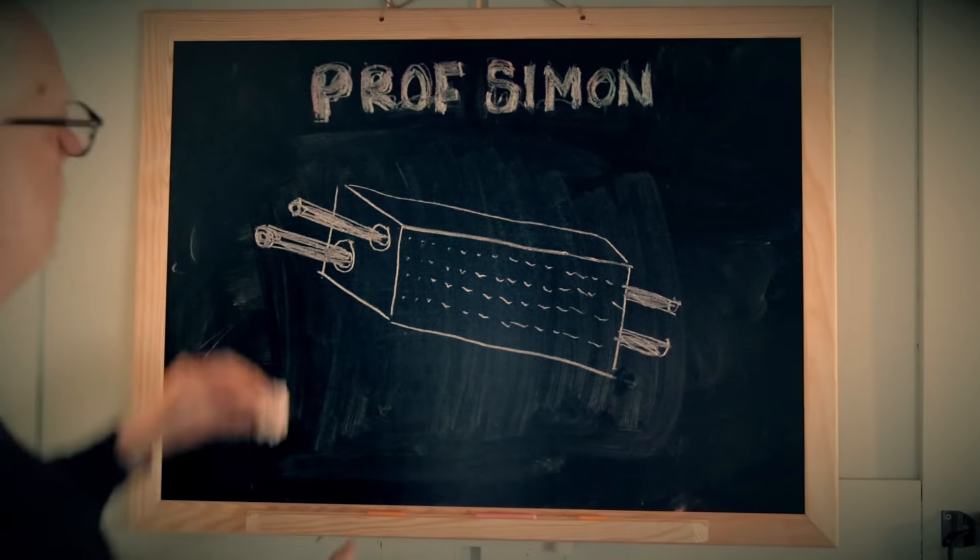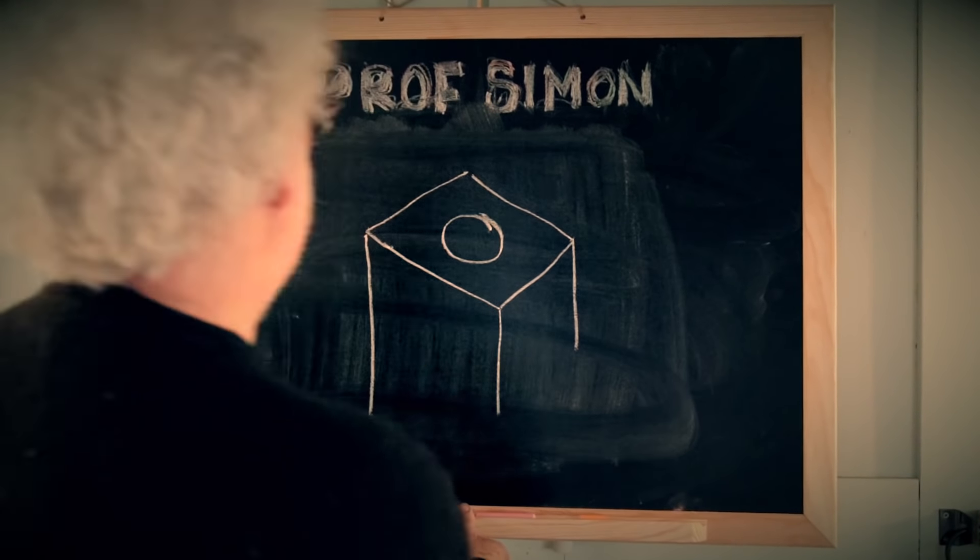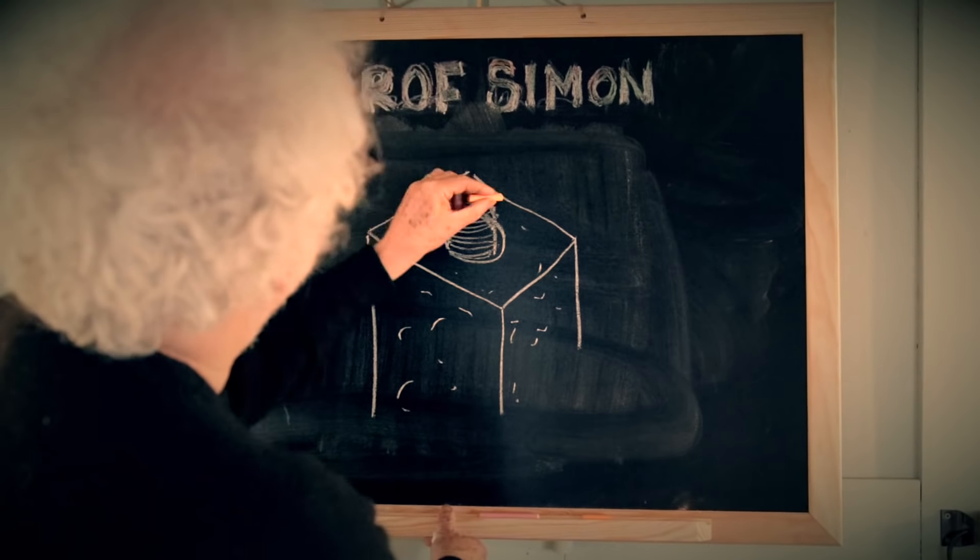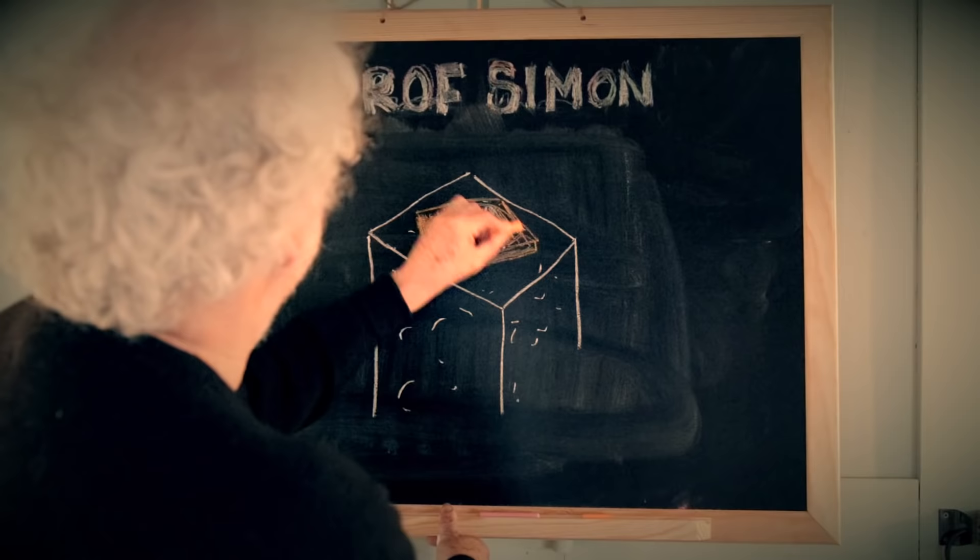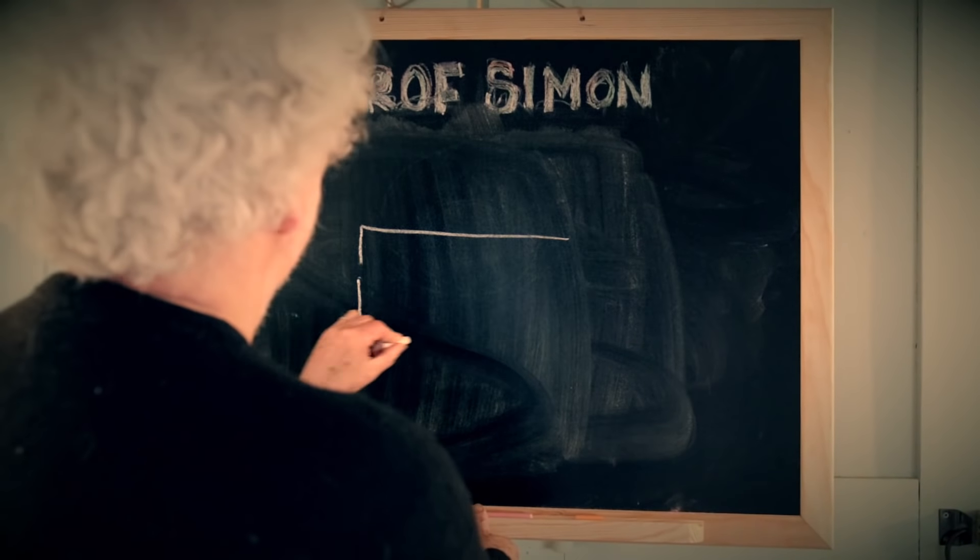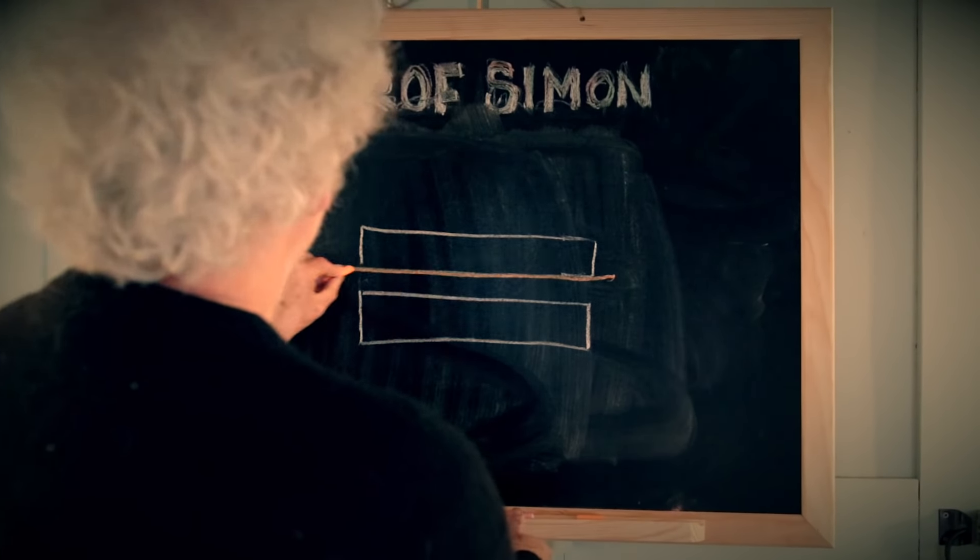This is how post-tensioning works. A sturdy steel bar is placed in a hole down the center of a concrete beam. Two large nuts are placed on either end of the threaded rod. The nuts are tightened to squeeze the concrete beam and hold it in compression.